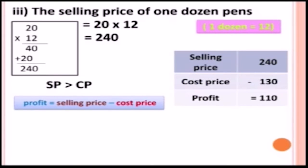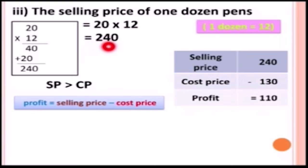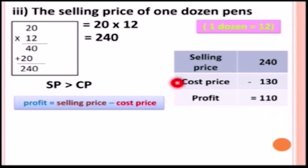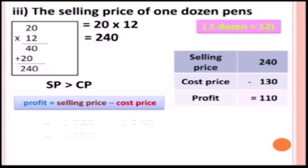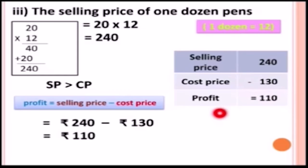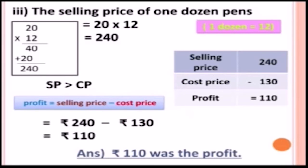The selling price of one dozen pens is rupees two hundred forty, which is greater than the cost price of rupees one hundred thirty, so there is profit. Profit equals SP minus CP: zero minus zero is zero, four minus three is one, two minus one is one. The profit was rupees one hundred ten.